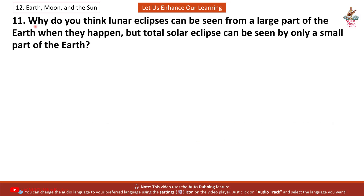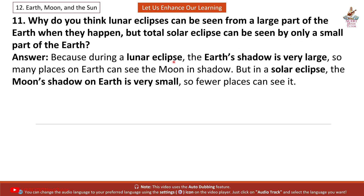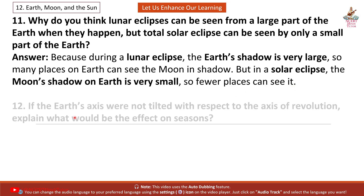Question 11. Why can lunar eclipses be seen from a large part of the Earth when they happen, but a total solar eclipse can be seen by only a small part of the Earth? Answer: Because during a lunar eclipse, the Earth's shadow is very large, so many places on Earth can see the Moon in shadow. But in a solar eclipse, the Moon's shadow on Earth is very small, so fewer places can see it.